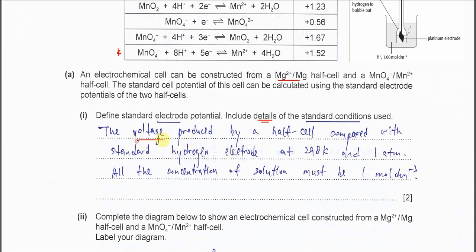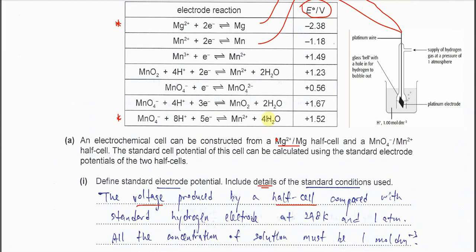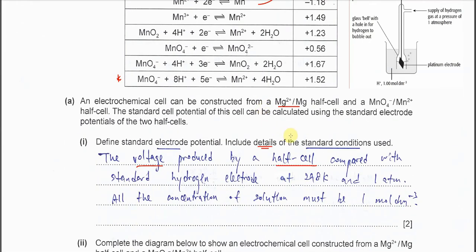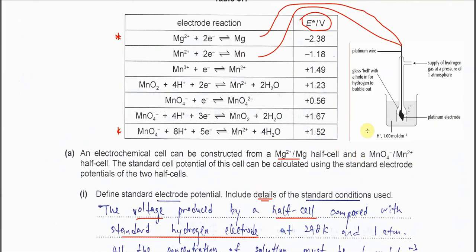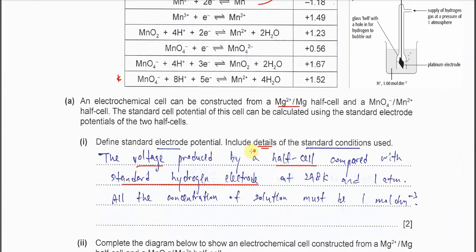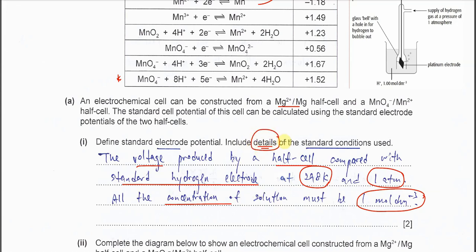Now let's start the definition. The voltage produced by a half-cell, compared with the standard hydrogen electrode, and this must happen under standard conditions. So what are the standard conditions? It must be 298 Kelvin, 1 atm pressure, and — very importantly — the concentration of the solution must be 1 mole per dm³.